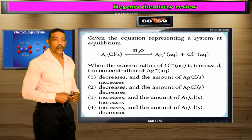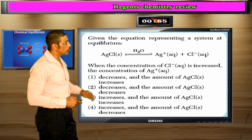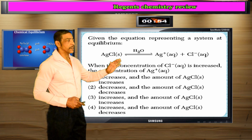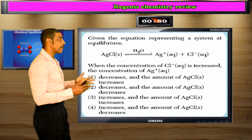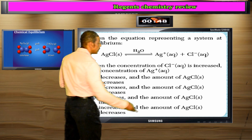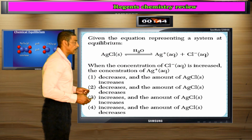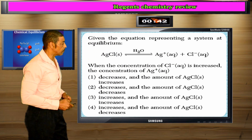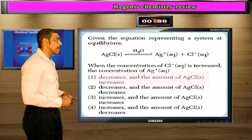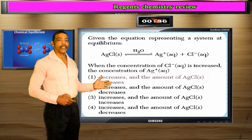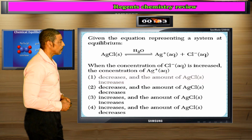When the concentration of chloride ion is increased, the concentration of silver ion changes. In this particular case, we have a left shift because we've increased the amount on the product side, causing the reaction to shift to the left. That's going to increase the amount of reactant. So the correct answer is that the amount of Ag+ decreases and the amount of AgCl will increase.